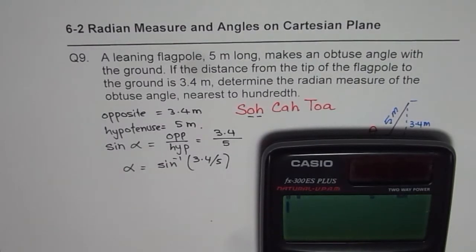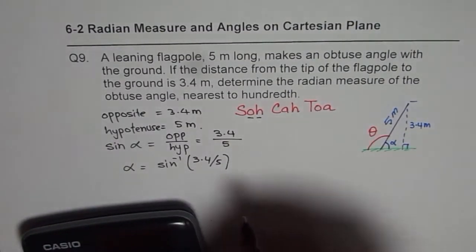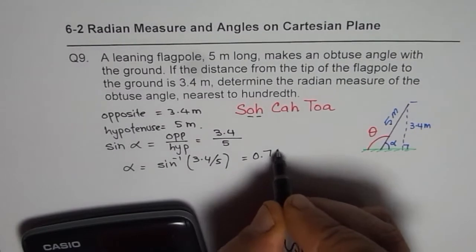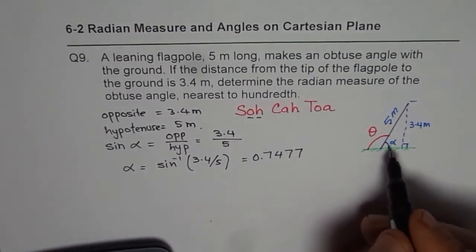So second function shift sine inverse 3.4 divided by 5 equals 0.7477. So we get 0.7477. That is the angle which is alpha.